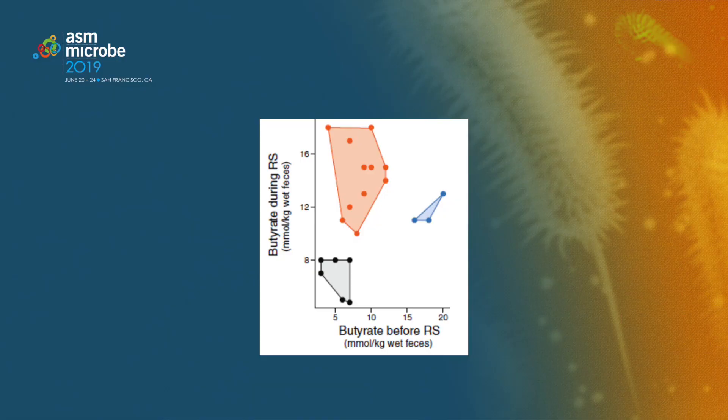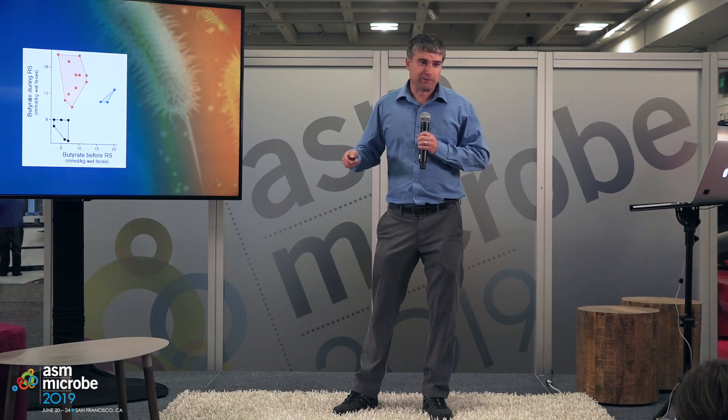But that's on average. If you look at people on an individual basis, you'll see that certain people — shown here in orange — got a significant increase in their butyrate levels. You also have people in blue who didn't get a big increase, but they already had pretty high butyrate levels to begin with. And then we have the people in black, who started with low butyrate, ate the resistant starch, and their butyrate levels didn't go up. We're very interested in why those people don't get an increased butyrate response.